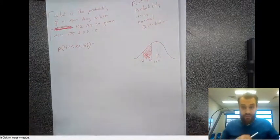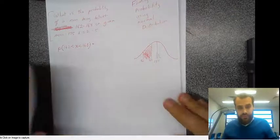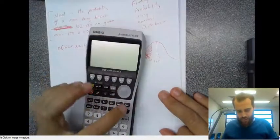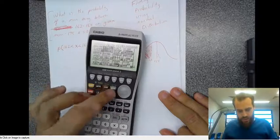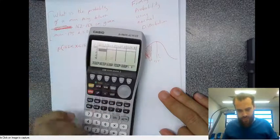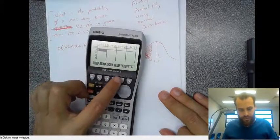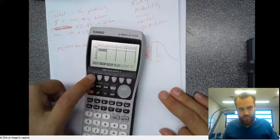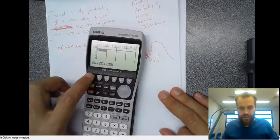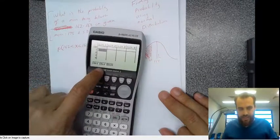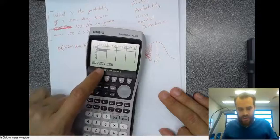Our calculator just does it. It's really simple. Turn it on. Menu, stat mode. Go to distribution. We're going to do a normal distribution. And then we're going to do an ncd. Don't worry about npd. We're going to do ncd.